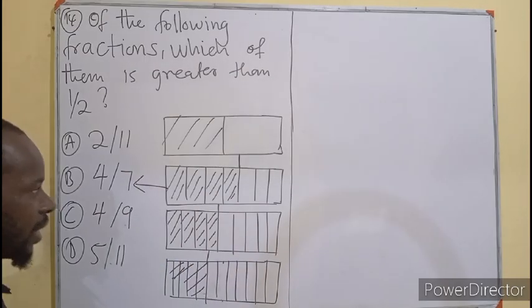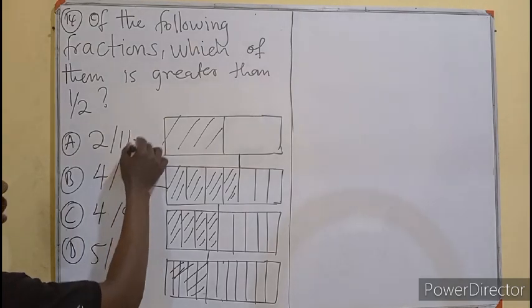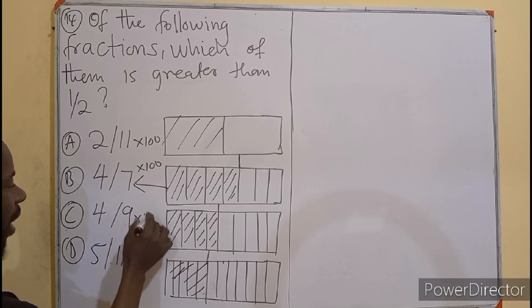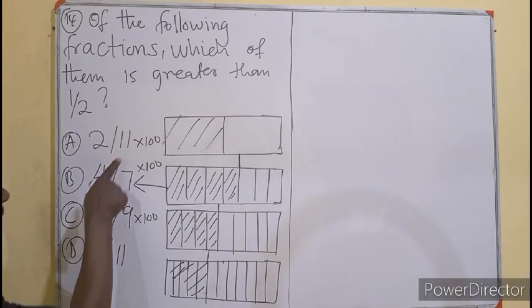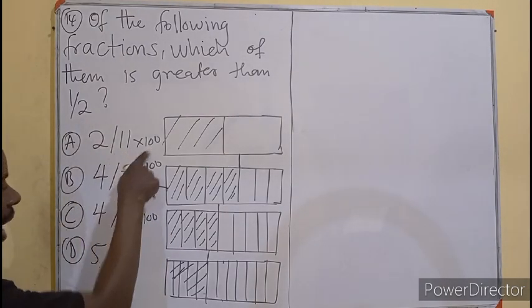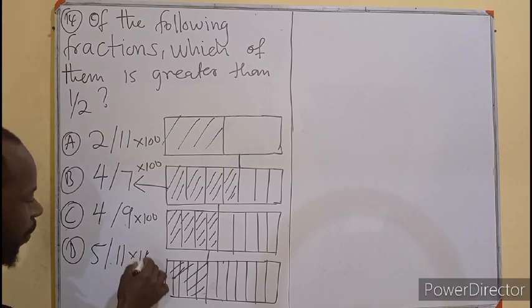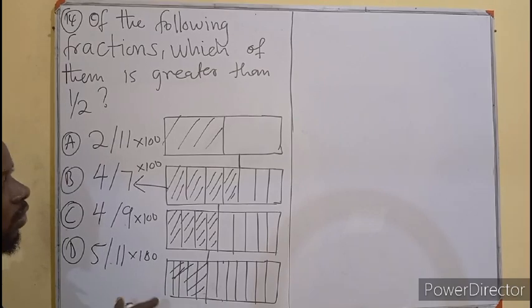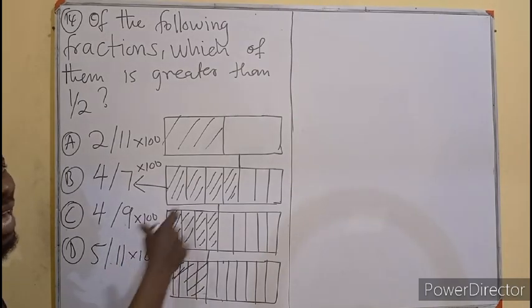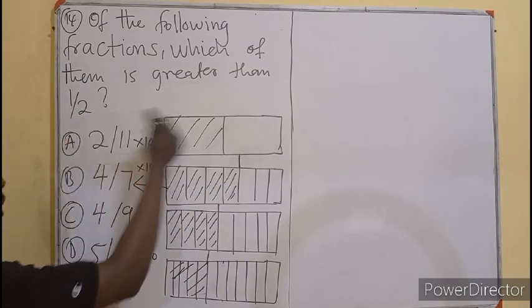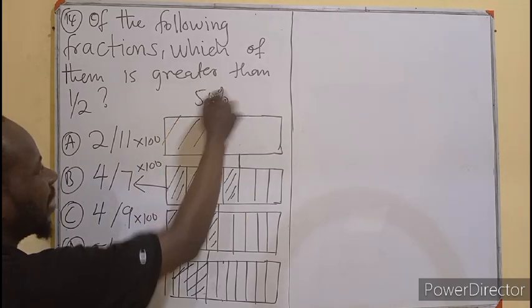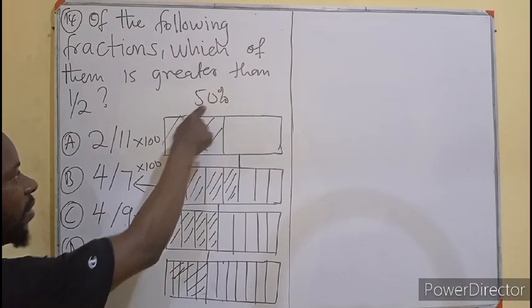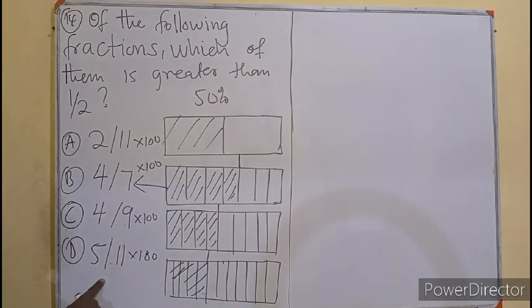The other way is to multiply all of them by 100. Multiply each of the fractions by 100, the whole fraction by 100. If you do that, you find the percentage of each of them. Then you compare the percentages to see which of them has the higher percentage. Because this is going to be 50%, because half of 100 is 50. So you are comparing 50% to all of the percentages.